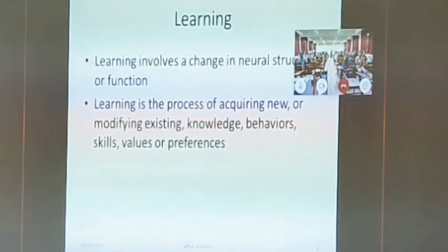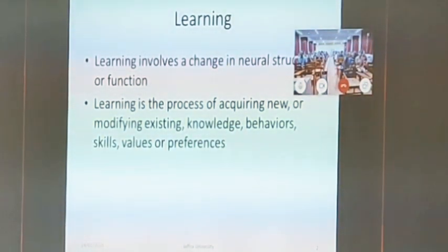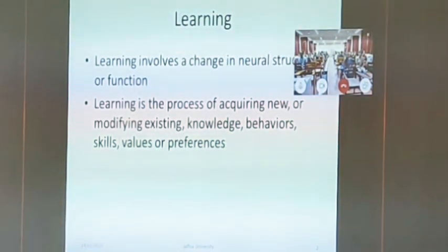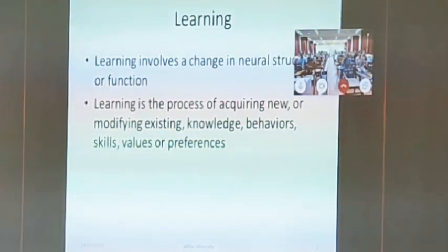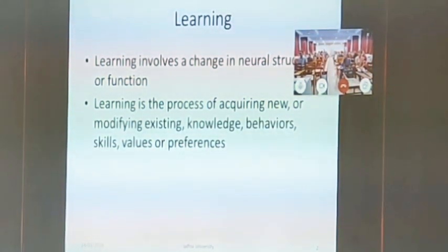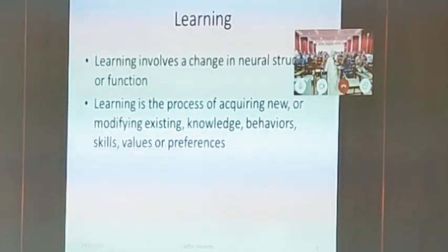Learning changes our neural structure and our function. Whenever we see a picture, we observe the shape, structure, and color — whatever things we see through our eyes get registered in our brain, automatically changing our knowledge by modifying the content. We get improved content, and skills are improved or behavior can be modified. So the values will be automatically changed. Not only what we see, but also what we hear, write, speak, and read. This is about the human learning method.